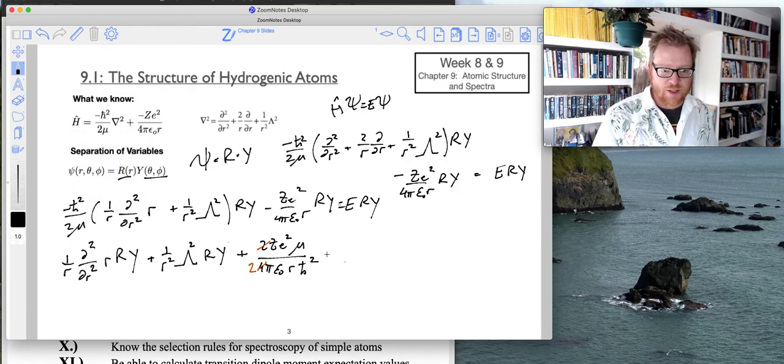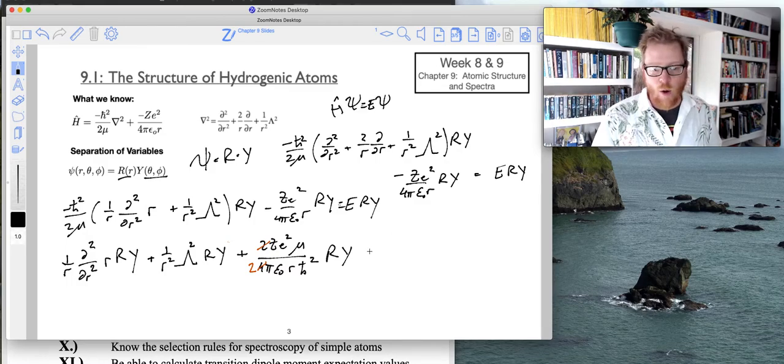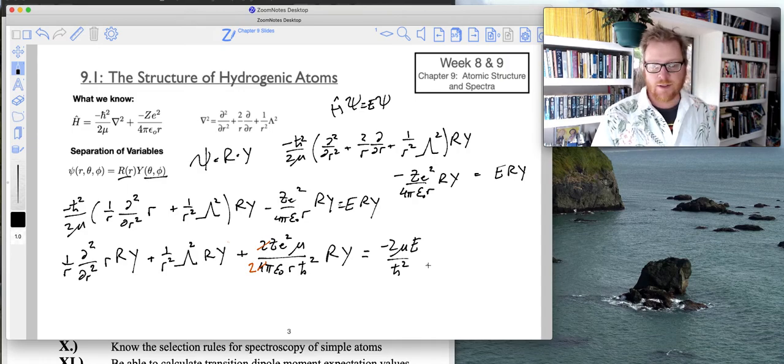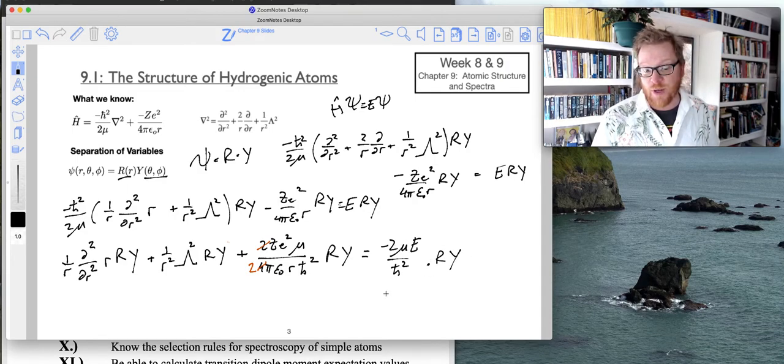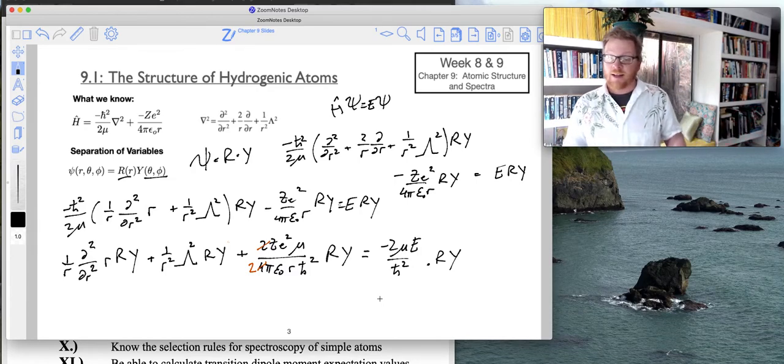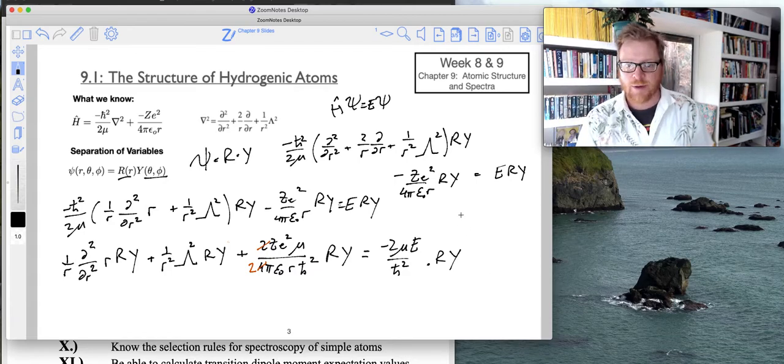And then now of course that's still times r y. And now all of that equals negative 2 mu e over h bar squared times r y. And you can see this negative 2 mu e over h bar squared, that's our wave number solution. It's the same, the wave number k.